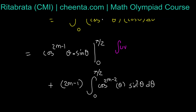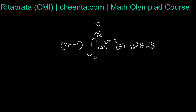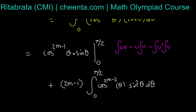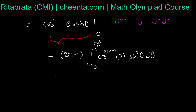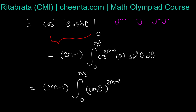Using the integration by parts formula: ∫uv = u·∫v − ∫(u'·∫v). The boundary term cos^(2m-1) θ · sin θ evaluated from 0 to π/2 goes to zero: at θ = π/2, cos θ = 0; at θ = 0, sin θ = 0. So the product is always zero at both endpoints, and we can write sin² θ as 1 − cos² θ.